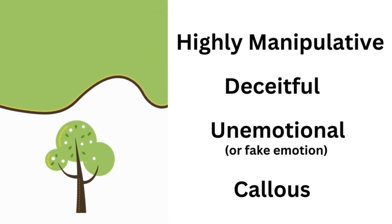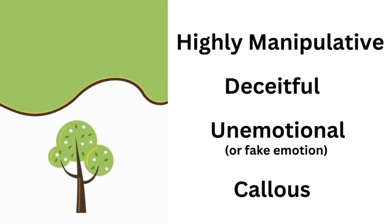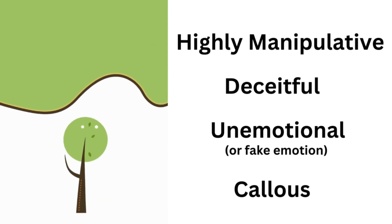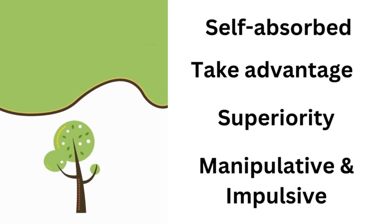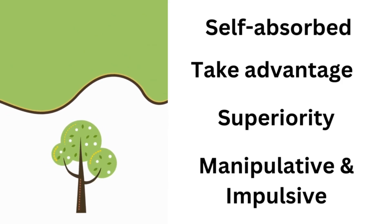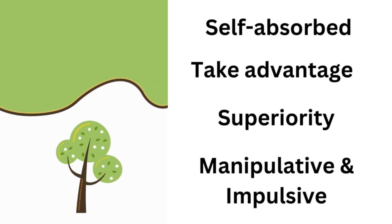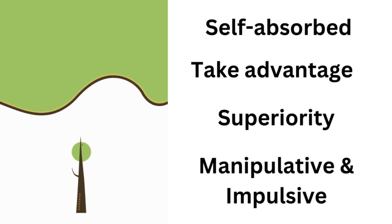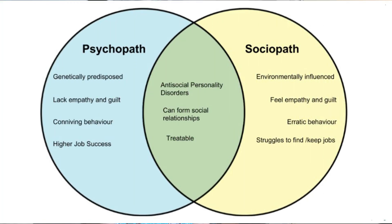Psychopathy is a construct and it seems to have two main branches. The first branch is seen with people who are highly manipulative, deceitful, unemotional, and callous — your typical psychopaths, like Ted Bundy or Jeffrey Dahmer. The second branch is the sociopathy side, also not in the ICD or DSM, where you find people who are very self-absorbed, take advantage of others, have a sense of superiority, or may be manipulative and behave violently or impulsively. There is a bit of overlap between the two.